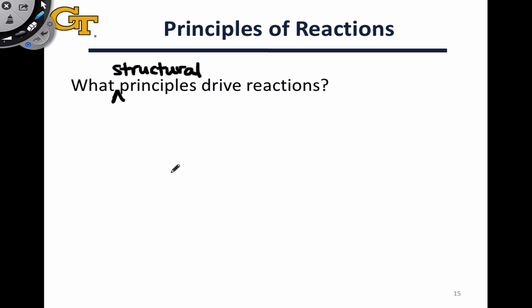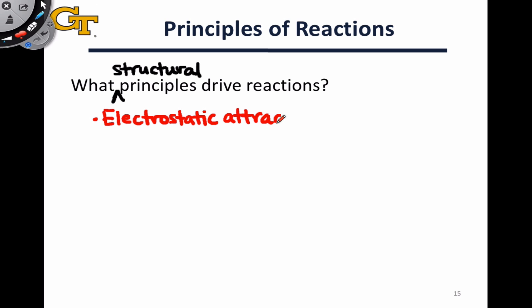Why does a particular molecular structure react in the way it does? There are three general principles — all deeply related to one another. The most essential of the three is simple electrostatic attraction. If you think about what a chemical reaction is, a chemical reaction involves the reorganization of electrons. Electrons are negatively charged, so if we have two species with different charges, the neutralization — the attraction of those charges to one another — could result in the reorganization of electrons. That is chemical reactivity. So electrostatic attraction, on a very deep level, drives a lot of chemical reactions.